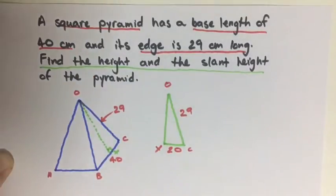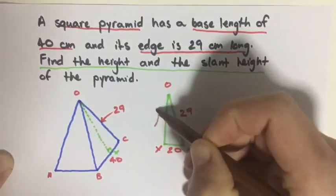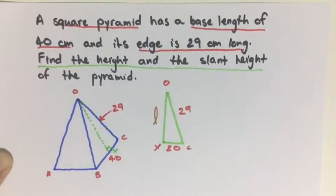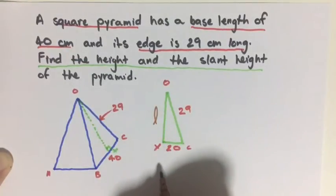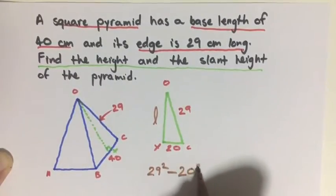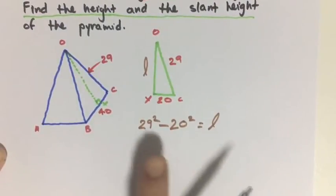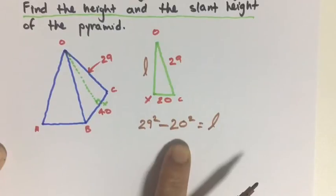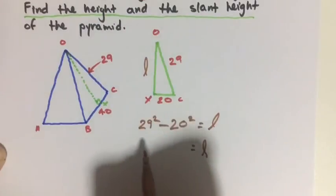So if we use Pythagorean theorem we can figure out what the slant height is. So this is going to be our slant height. Using Pythagoras, we know slant height is going to be 29 squared minus 20 squared equals slant height squared. If we work all this out, 29 squared minus 20 squared, our slant height is going to come out to 21 centimeters.